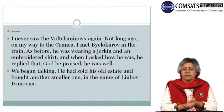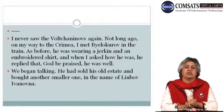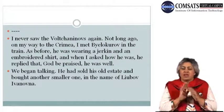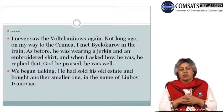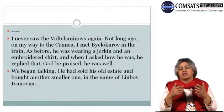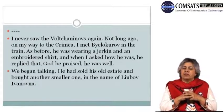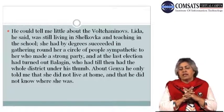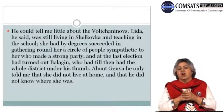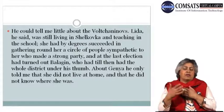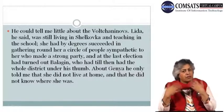'Not long ago, on my way to the Crimea, I met Balakurov in the train.' Balakurov is the person who owns the house where he had resided during that time. He is dressed the same way, and when they started talking, the artist narrator realized that Balakurov had sold that estate when he left and had bought a smaller one in the name of his beloved Lyubov Ivanovna. Balakurov could not tell him anything about the Volchaninovs, although the artist narrator obviously wanted to know about them. He says that as far as Lida was concerned, she was still in the same place and still doing the same kind of work.